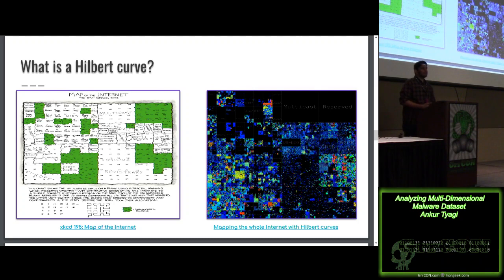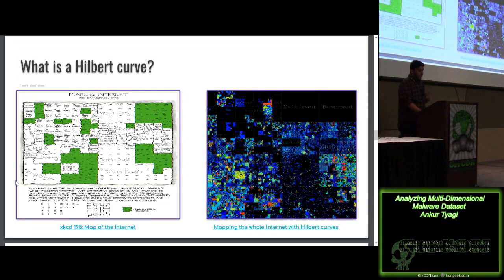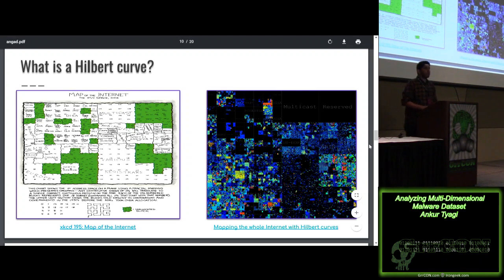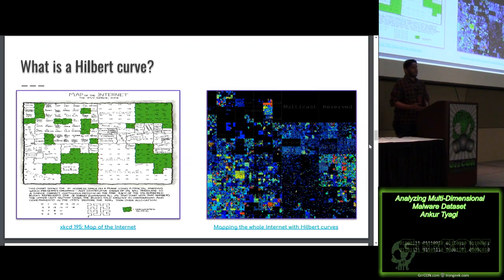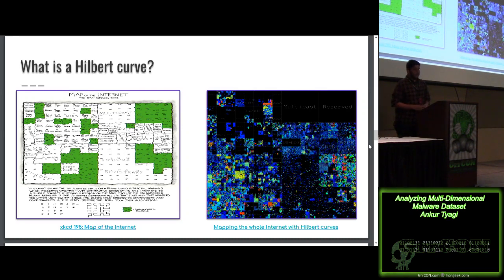Hilbert curve — all the addresses within the IPv4 address space, 2 raised to 32 — four billion addresses — everything has been compressed into this image. Hilbert curves have a very special property: all elements within the input set that are similar will be grouped together. As you can see, we have groups of multicast addresses for various registries grouped together. This is a hand-drawn map, and the one on the right is an algorithmic generation of the same content, which is much more accurate. Each block and its color code represent a certain block of IP address space, and combined, this image shows all addresses within the IP space.